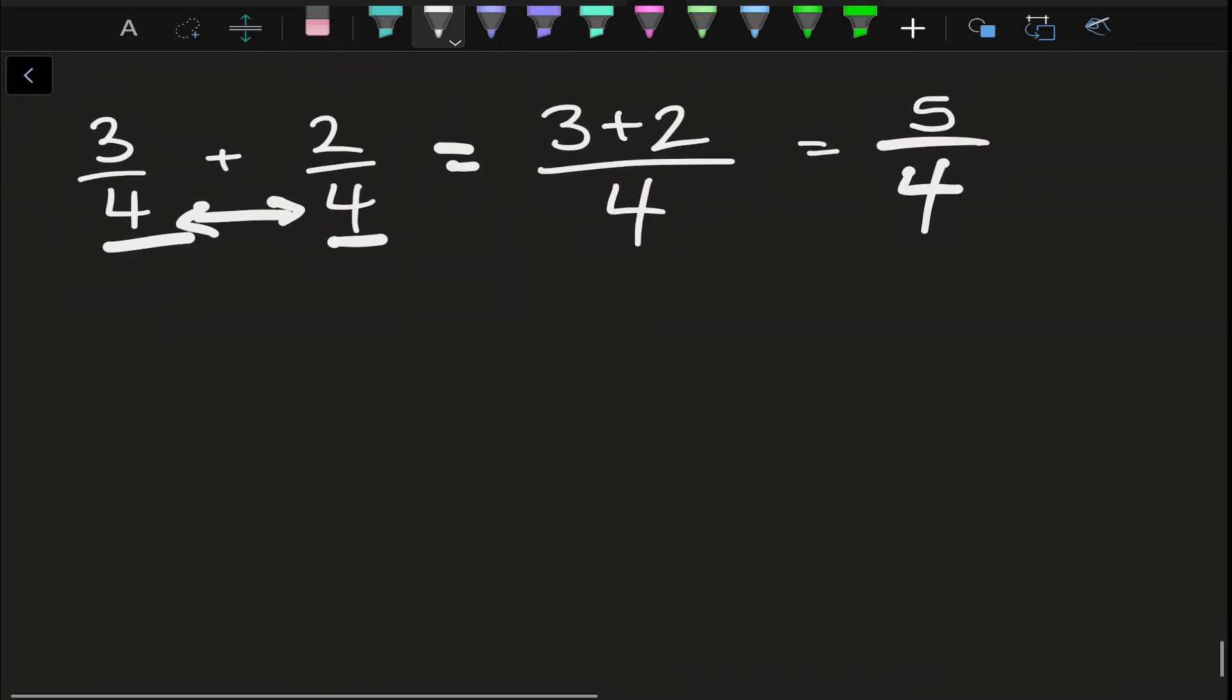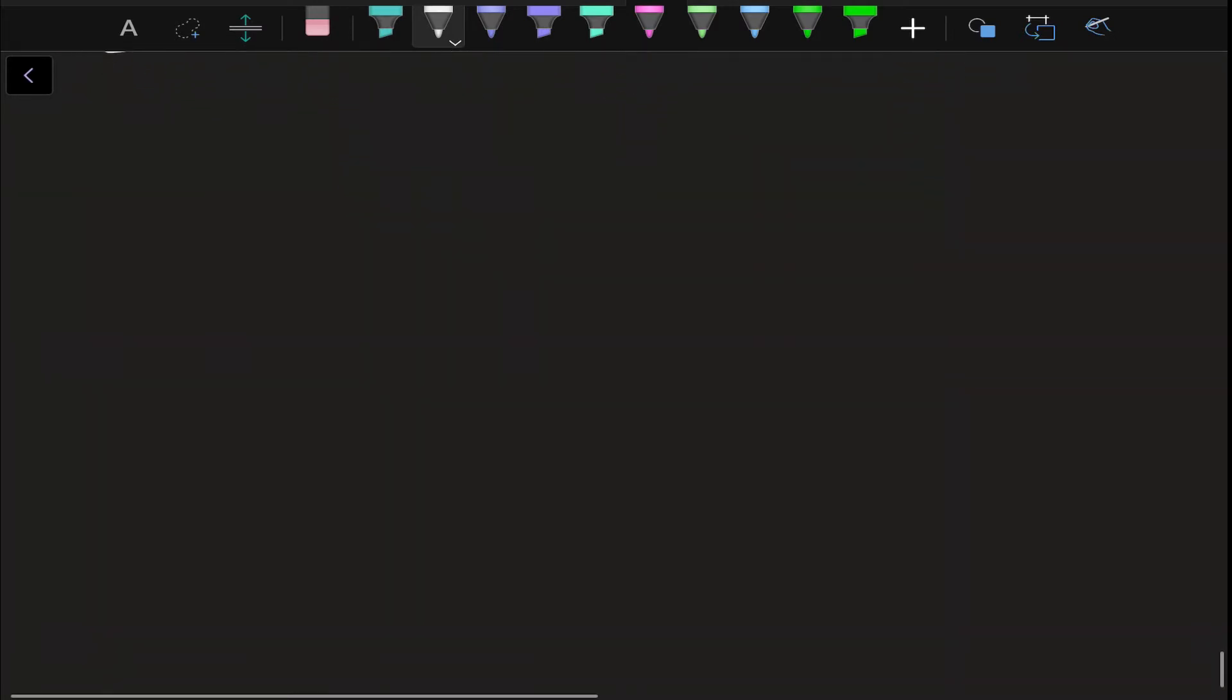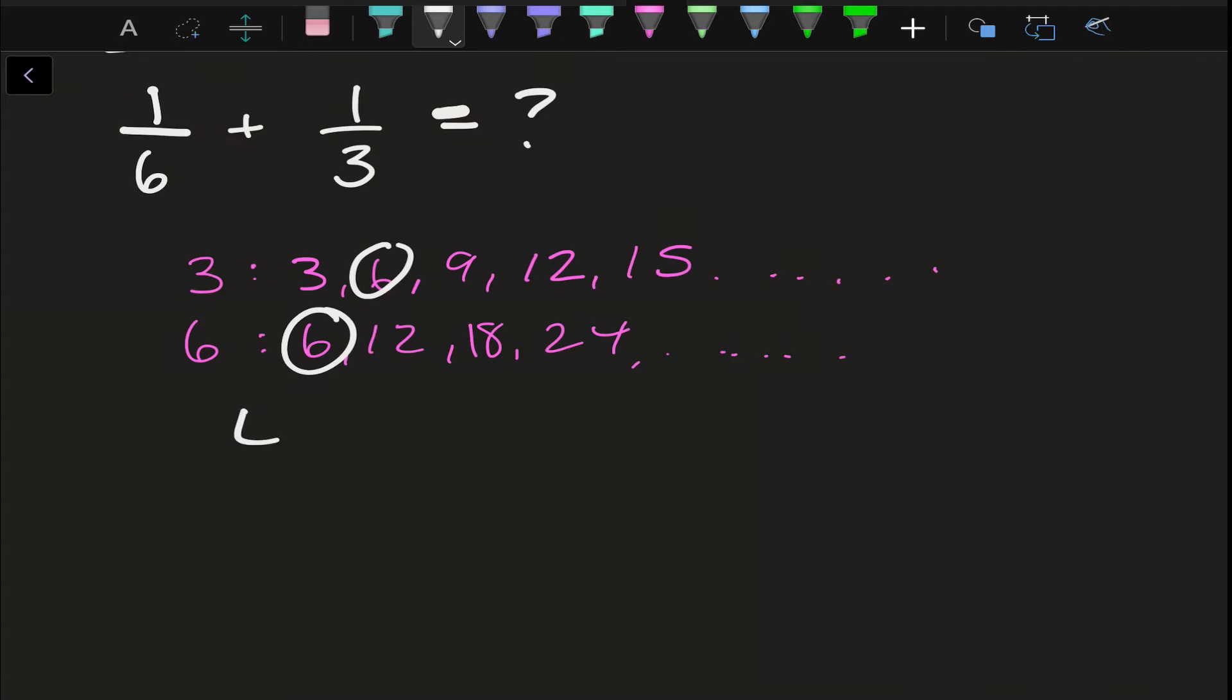Okay, so now we're going to grab an example where we have to look at that denominator. So I have 1 over 6 plus 1 over 3, and I need to know what that is. So, lowest common denominator. We can first try by writing down multiples. So I have 3, 6, 9, 12, 15, and forever. And I have 6, 12, 18, 24, and forever. So from here we know that 6 is our lowest common denominator, our LCD.